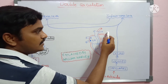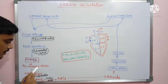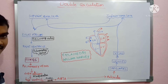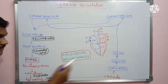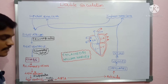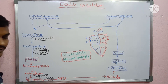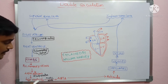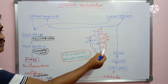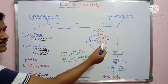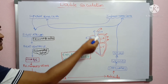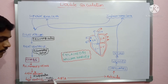Pulmonary veins carry oxygenated blood from the lungs. From the left atrium, blood transfers to the left ventricle through the bicuspid valve. From the left ventricle, blood transfers to the aorta — called the systemic aorta — which carries oxygenated blood to the body.